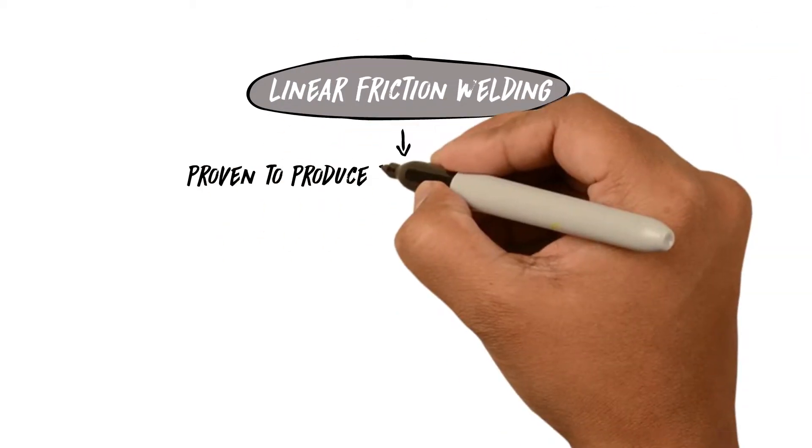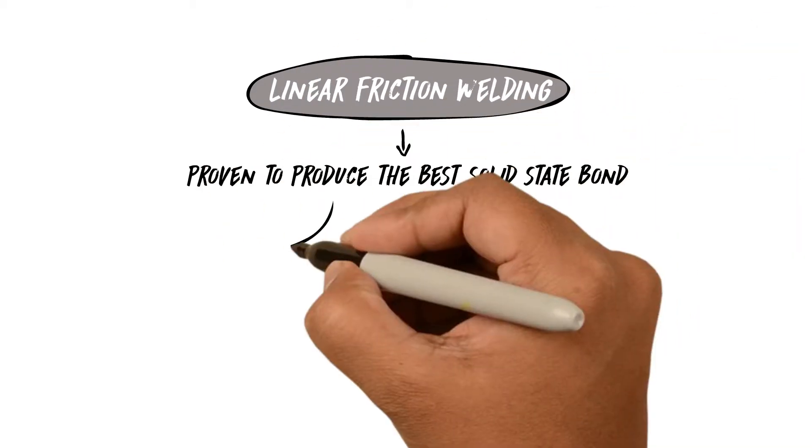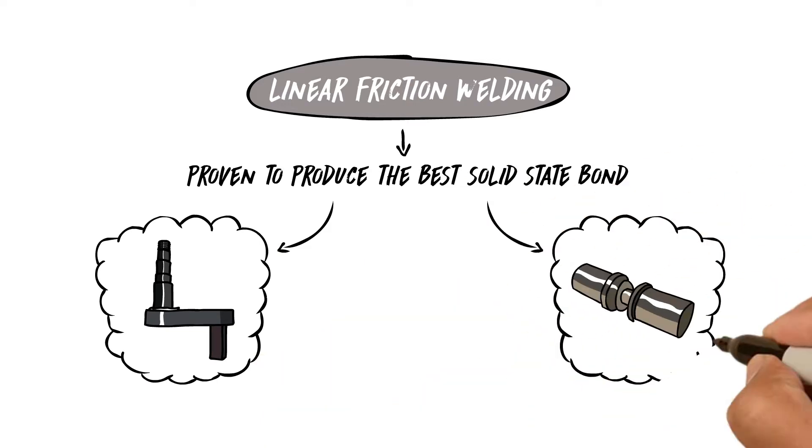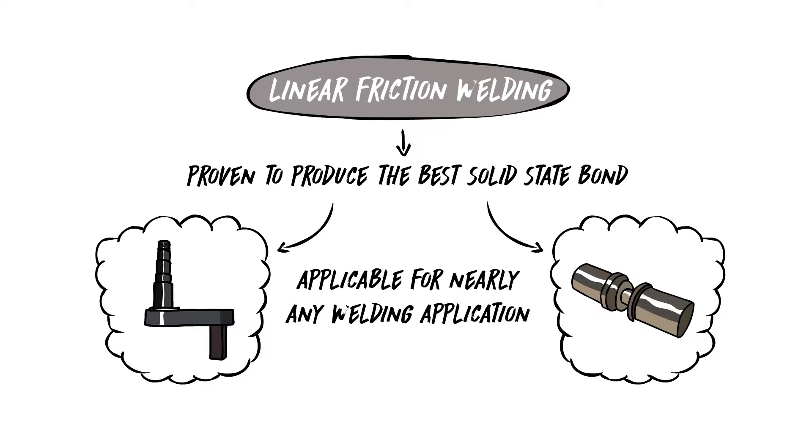Linear friction welding has been proven to produce the best solid-state bond between parts of the same or different materials or geometries, making it applicable for nearly any welding applications.